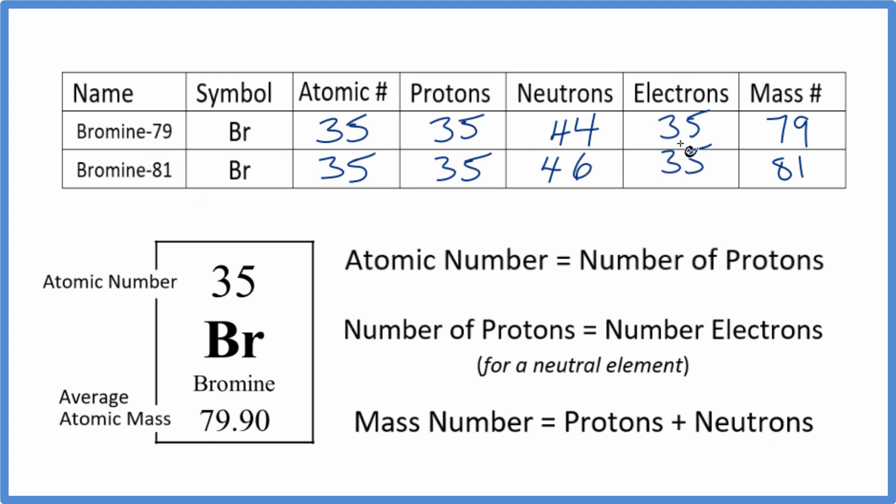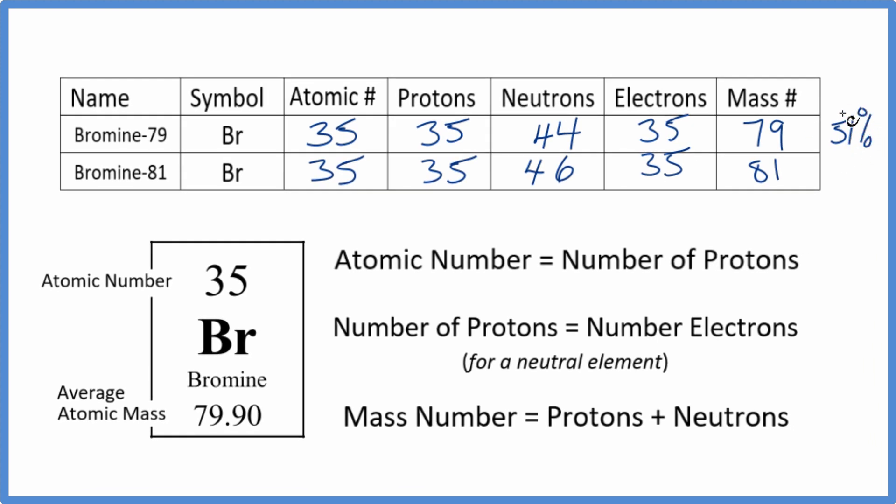If you had a sample of bromine gas or liquid and looked at the abundance of each isotope, you'd find that 51% is bromine-79 and about 49% is bromine-81.